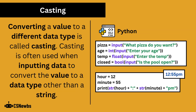Converting a value to a different data type is called casting. Casting is often used when inputting data to convert the value to a data type other than a string. You can see the different types of casting you need to know are int, float, bool, and str to represent converting into a string.